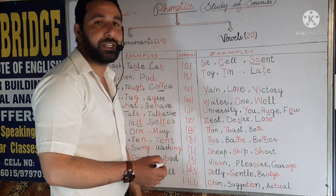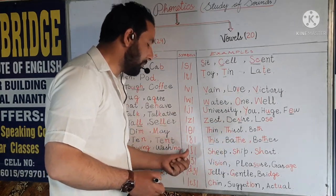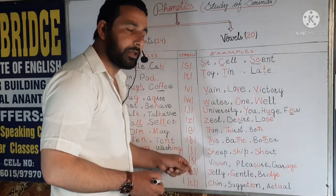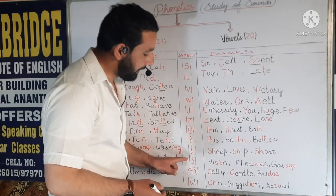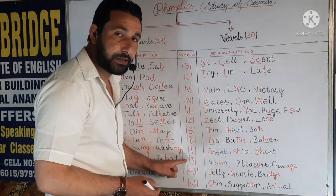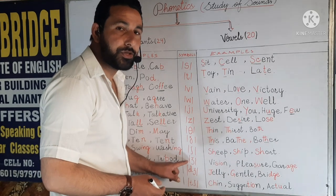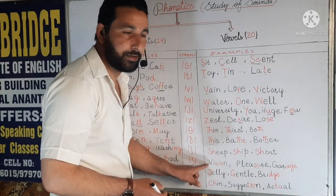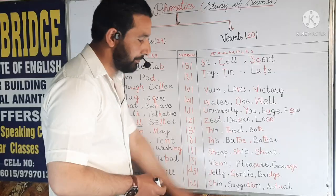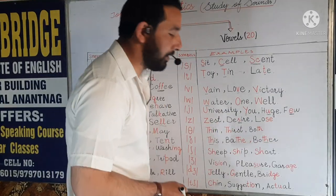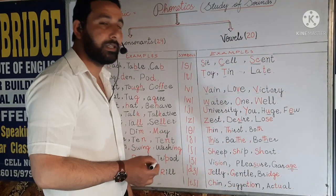It is not always SH letters that will sound SH — it may be some other letters as well that may sound SH. Next is the ZH symbol. This is the voiced counterpart. For example, we have 'vision', 'pleasure', and 'garage' — instead of A-G-E, we have the sound ZH.